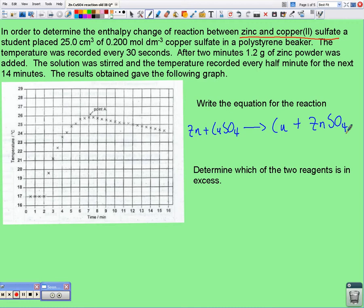We need to know that one-to-one ratio, because next it wants us to find out which of those two reagents is in excess. Well, zinc is given as a mass of a powder.